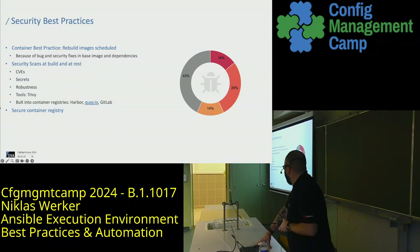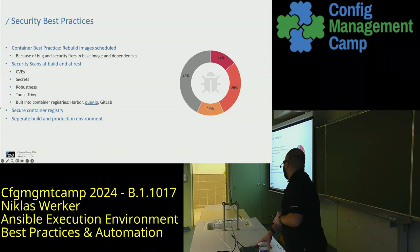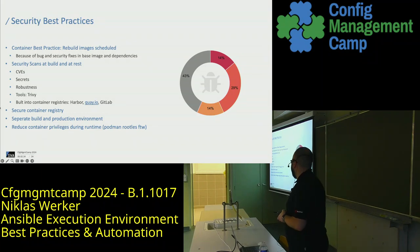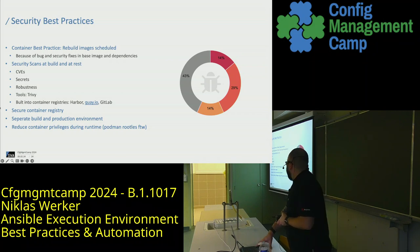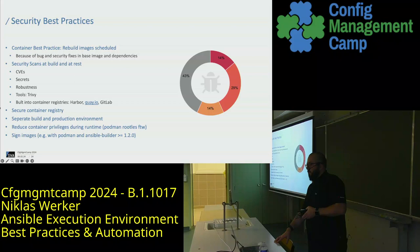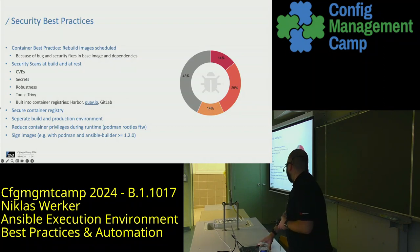Secure container registry is also often overlooked, especially in public environments. If you implement release management, try to separate your build from your production environment when building images on a schedule. Another thing is reducing container privilege during runtime — Podman is great for this because it uses rootless by default, unlike Docker. There's also image signing, implemented in Ansible Builder 1.2, where you can use Podman to sign images. You can't do this with Docker, but you can use BuildX and Cosign if you need to go the Docker route.